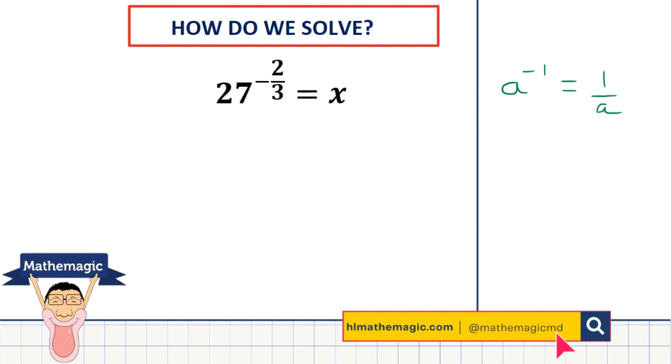So the first thing you could do here is just to flip the fraction around and say that this is the same as 1 over 27 to the power 2 thirds. And now you have a choice with whether you'd like to use the power 2 or the power 1 third.